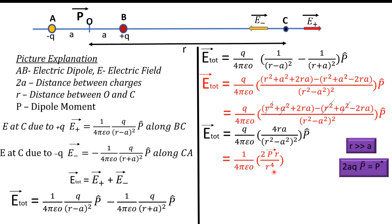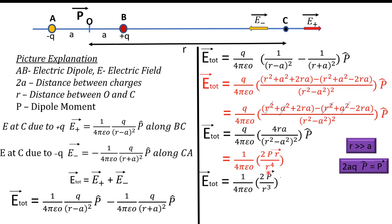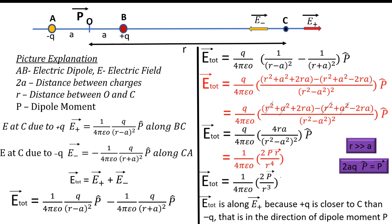Also, 2a × q × p-hat equals p-vector, as we have already seen. We split 4 as 2 × 2, so 2 × q × a gives the magnitude of p-vector. Therefore, the numerator becomes 2p × r, and with the denominator r⁴, the r cancels to give r³. So E-total = 1/(4πε₀) × 2p/r³ × p-hat.